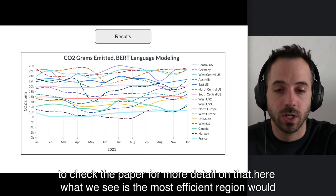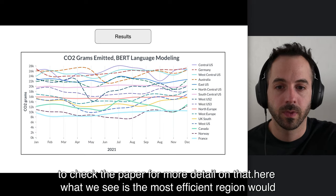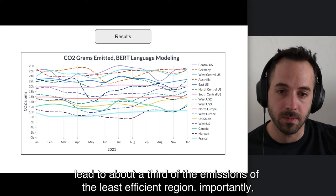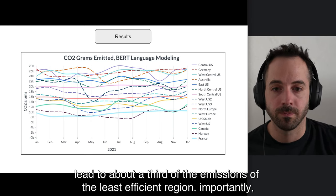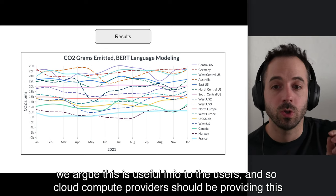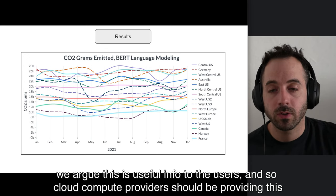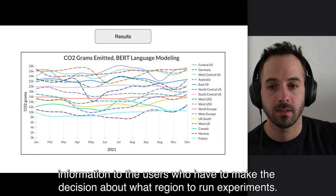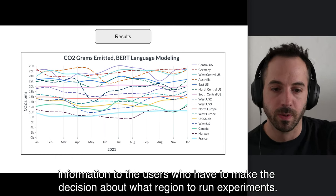We also evaluate training our models at different times of day, and I encourage you to check the paper for more detail on that. Here what we see is the most efficient region would lead to about a third of the emissions of the least efficient region. Importantly, we argue this is useful information to the users, and so cloud compute providers should be providing this information to the users who have to make the decision about what region to run their experiments.